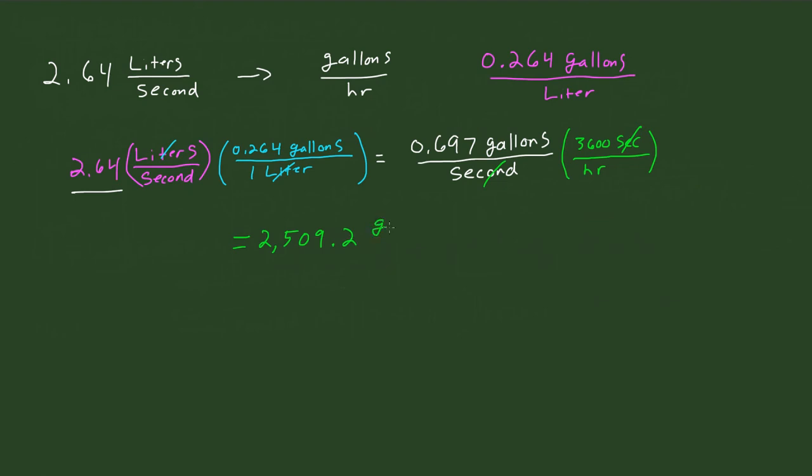We have gallons per hour. So therefore, we figure that, or we calculated that 2.64 liters per second is the same thing as 2,509.2 gallons per hour.